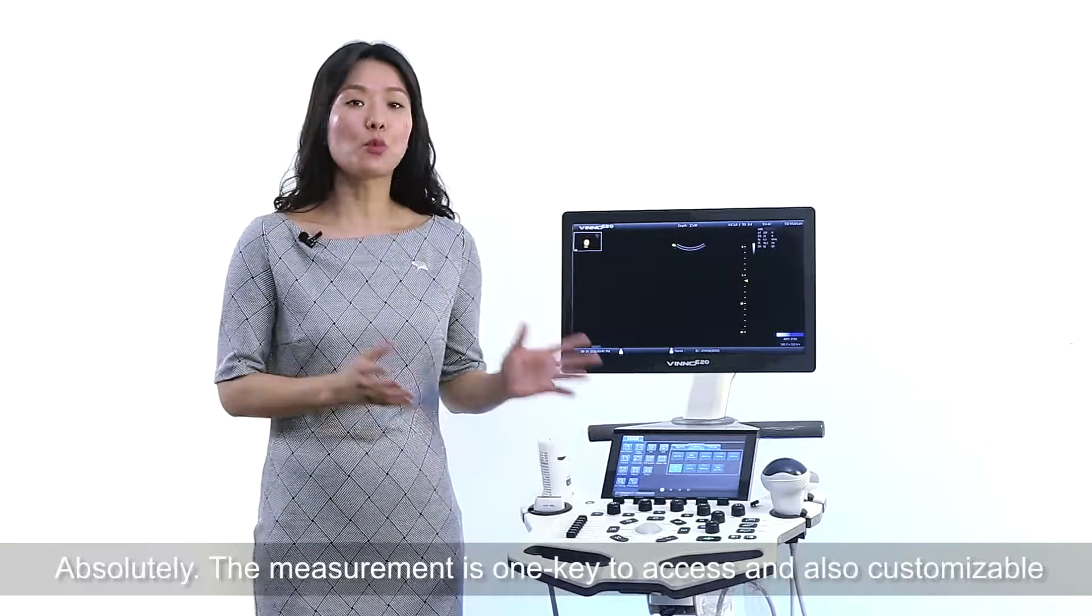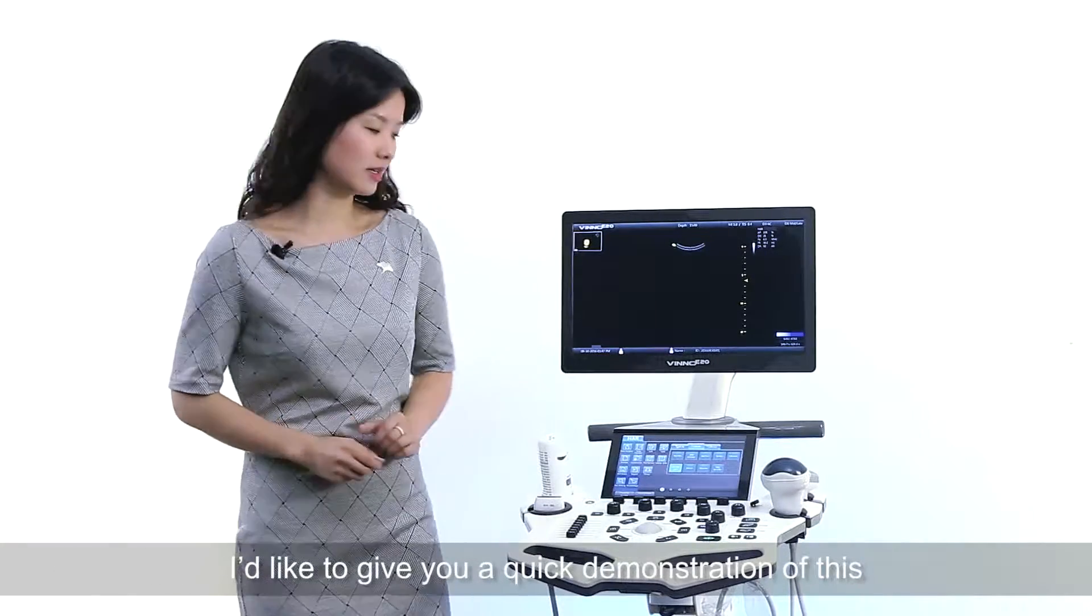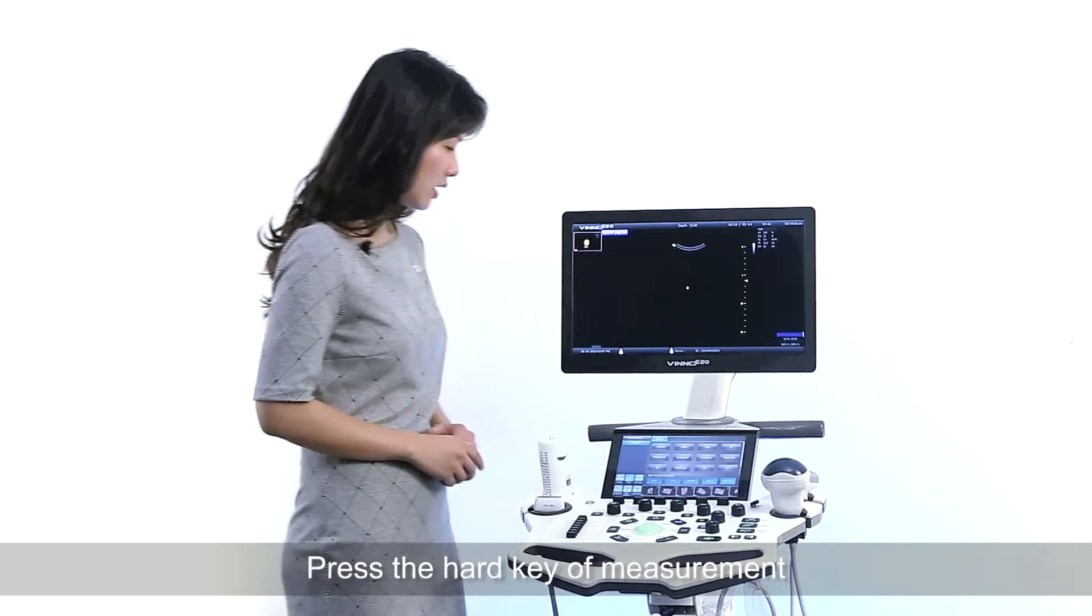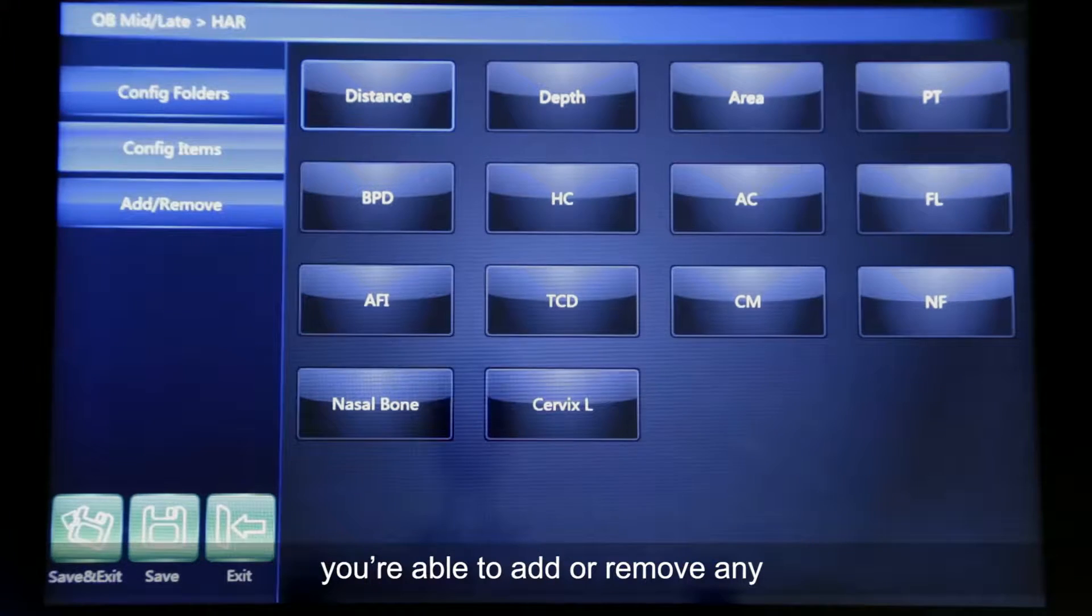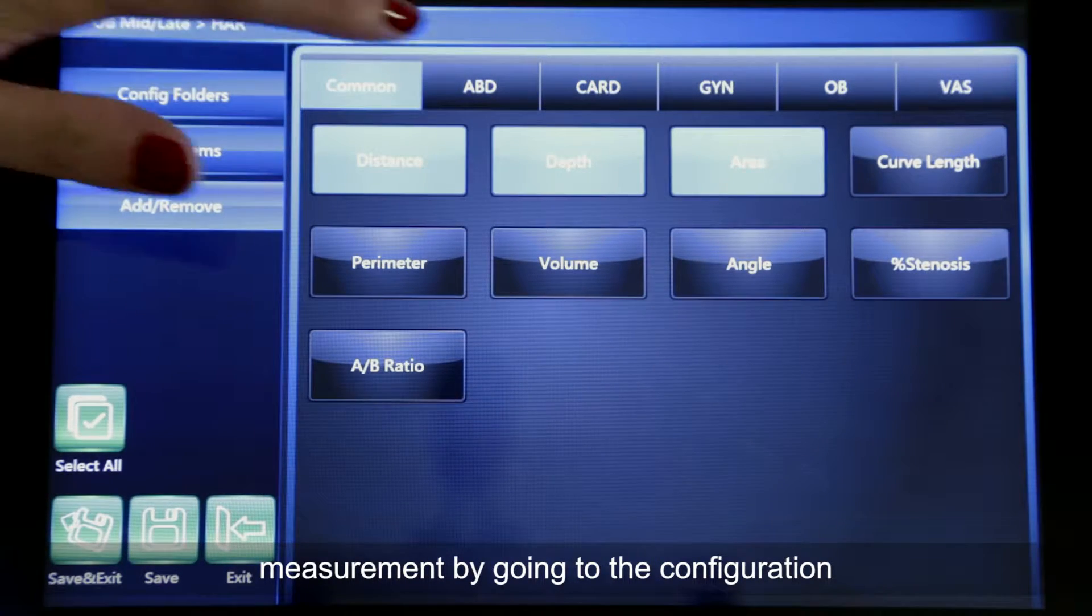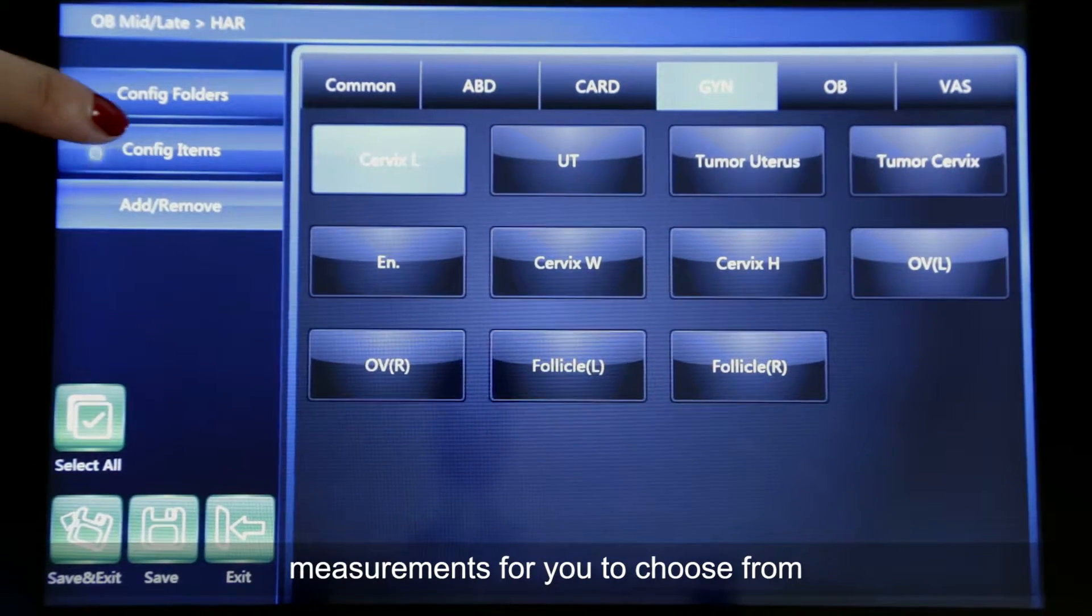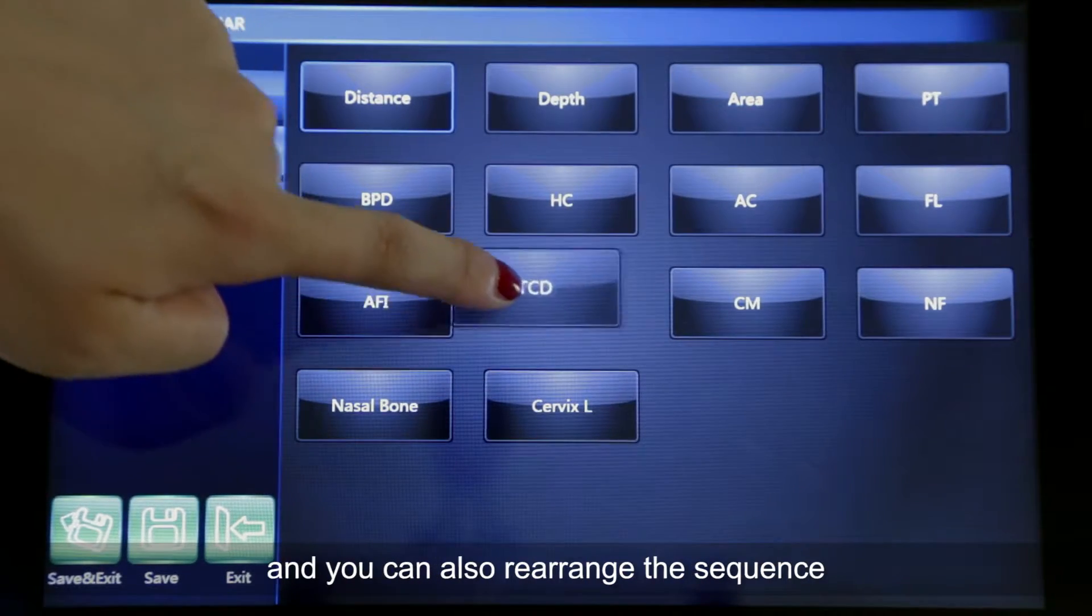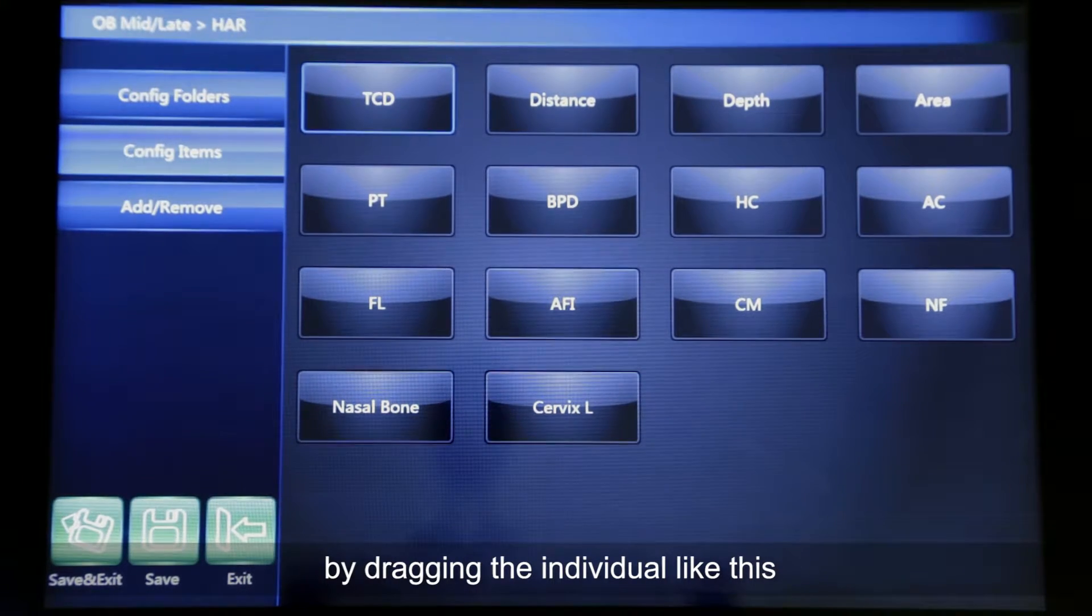The measurement is one key to access and also customizable. I'd like to give you a quick demonstration of this. Press the hard key of the measurement. You're able to add or remove the measurements by going to the configuration. We have a huge library of measurements for you to choose from. And you can also rearrange the sequence by dragging the individual like this.